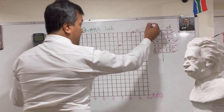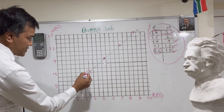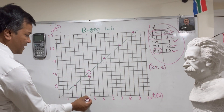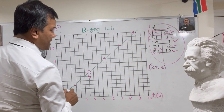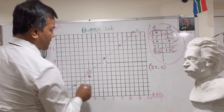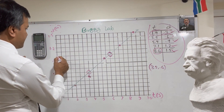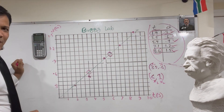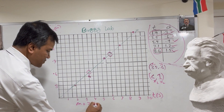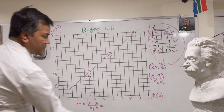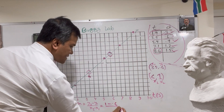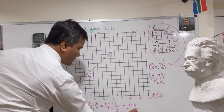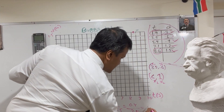To calculate the slope, we need two points from the line — not data points. The first point is (3.5, 0.6) and the second is (6, 1). So m equals (y2 minus y1) over (x2 minus x1), which is (1 minus 0.6) over (6 minus 3.5) = 0.4 over 2.5 = 0.16.